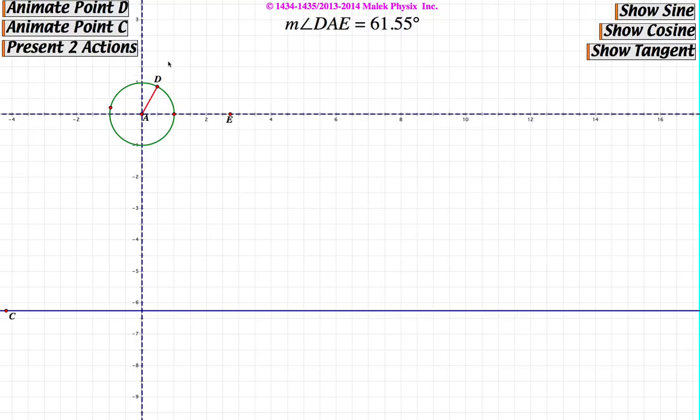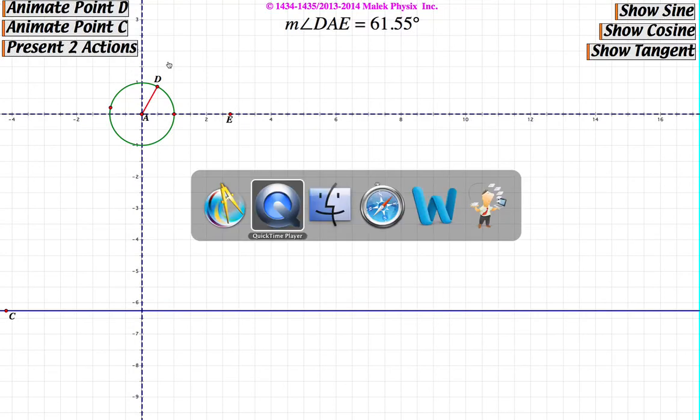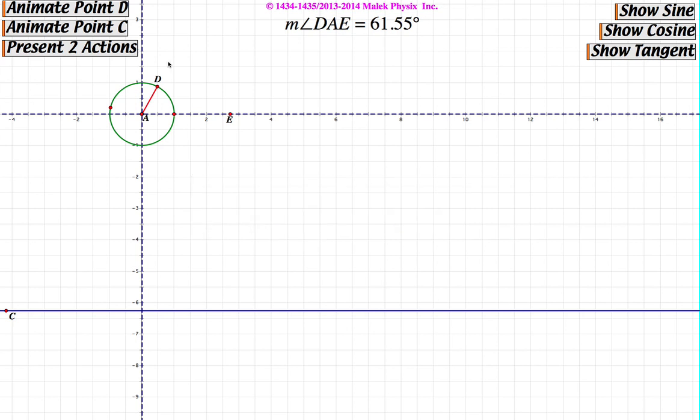What we have here is a geometry sketch pad that shows the unit circle. The angle is described by this endpoint on the unit circle, point D. DAE is the angle that we are keeping track of. If we animate this point, we'll be able to see that the numbers are changing.